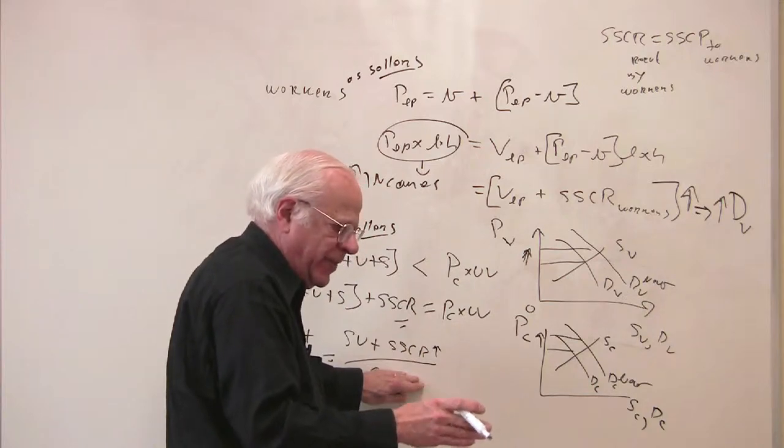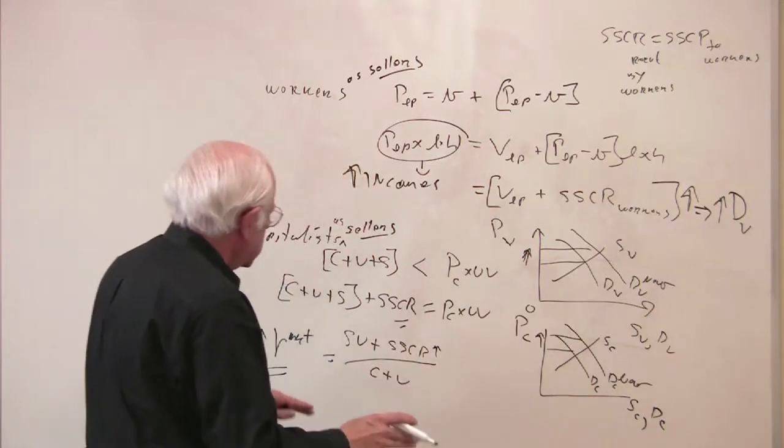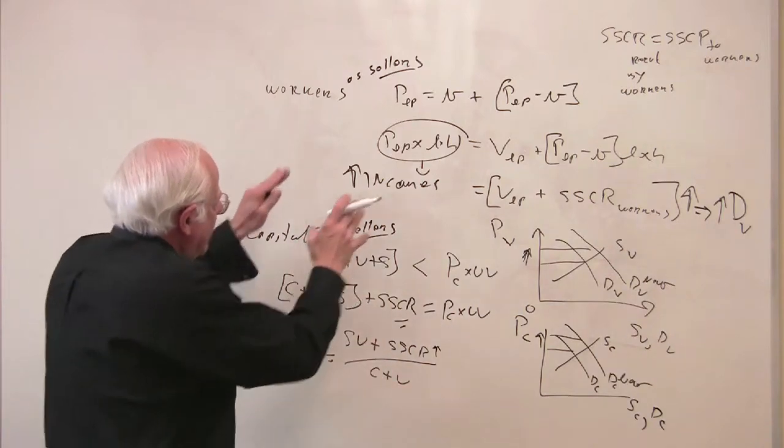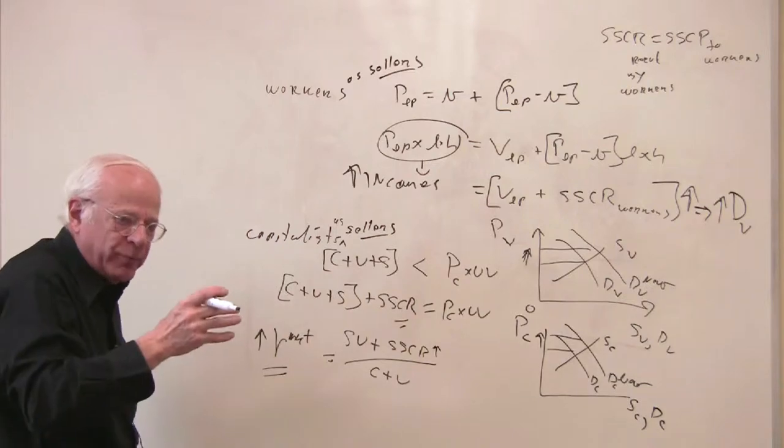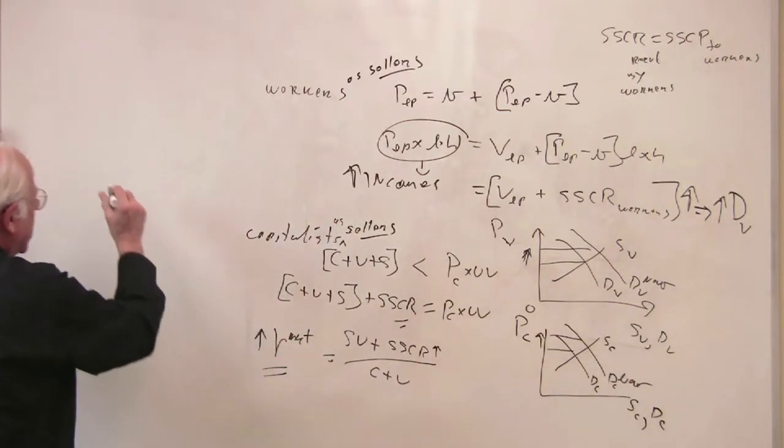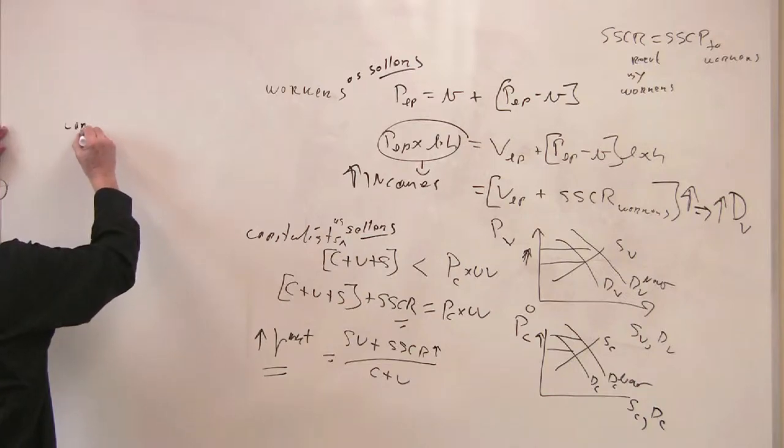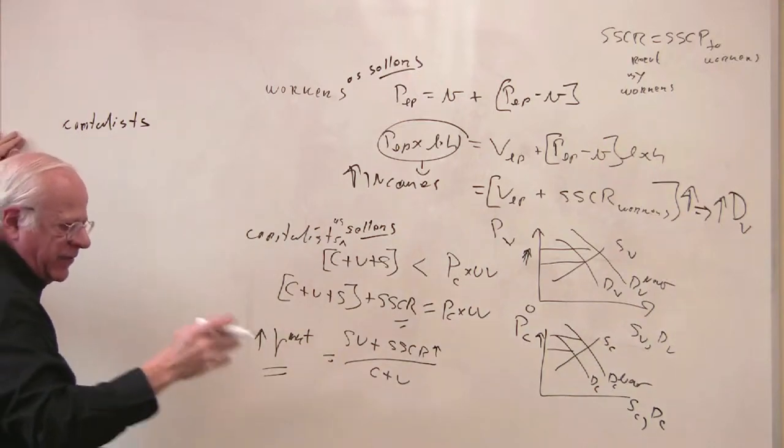I just did that here. This is the impact on the capitalists who are producing and selling means of production. So I want to examine now, what's the impact of this on capitalists who are producing and selling wage goods? I'm going to do the same thing now. So this is the capitalists who are producing and selling TV sets.